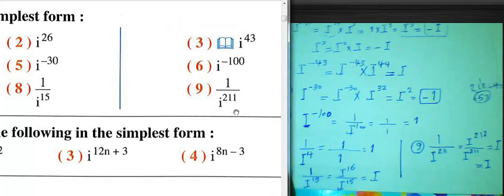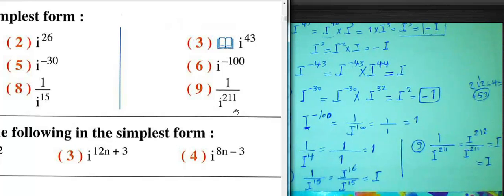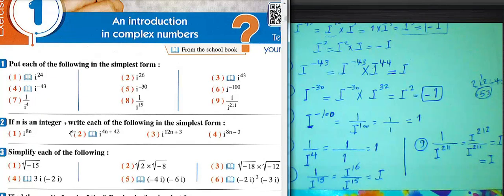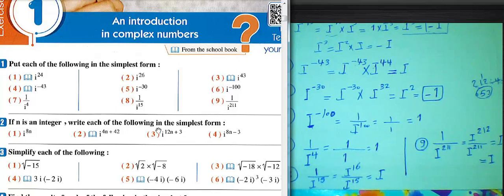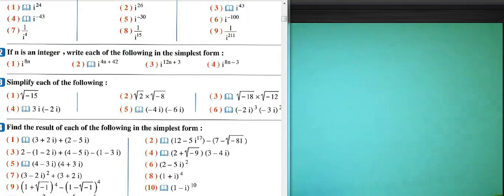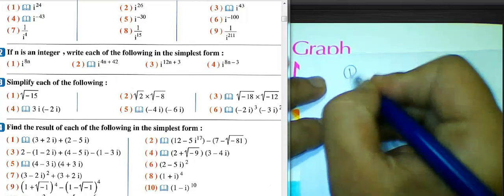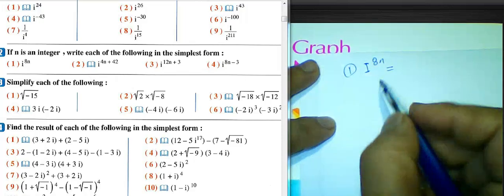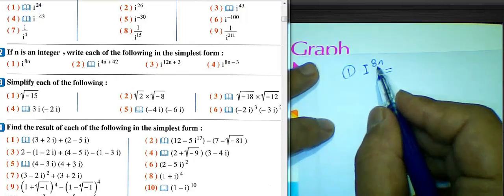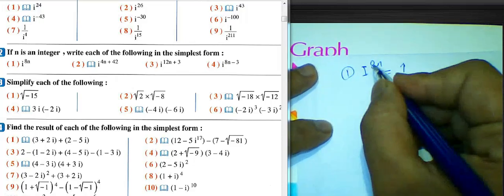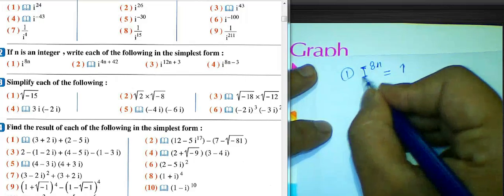Another example, question number 2: if n is an integer, write each of the following in the simplest form. Number one: i^(4n). Since n is an integer, 4n can be divided by 4, so the result will be 1.